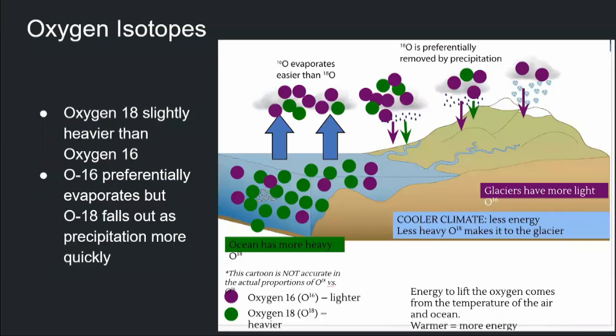So now we're going to see how we can use what we call isotope measurements, and in particular oxygen, to reconstruct past climates. That concept is a bit difficult, but hopefully with the drawings and my explanations you can understand it a bit better.